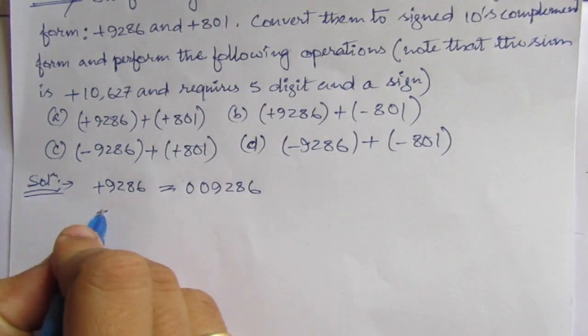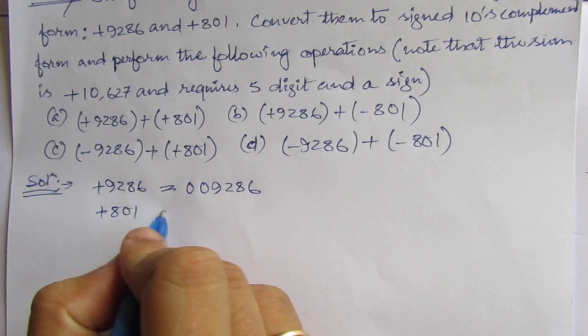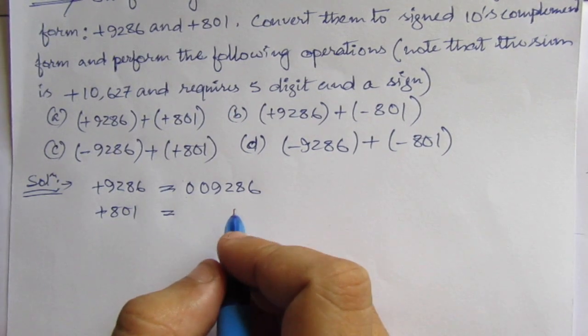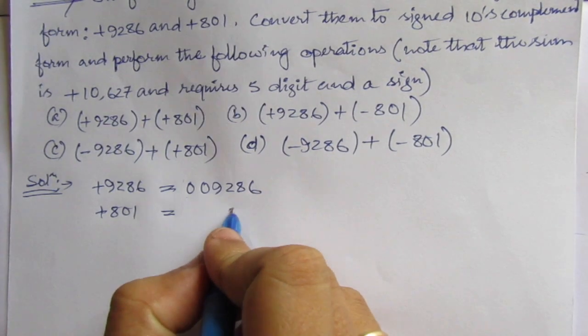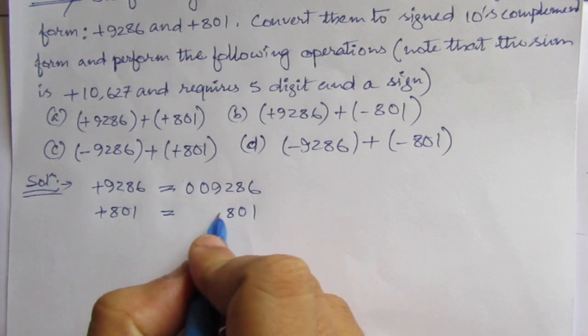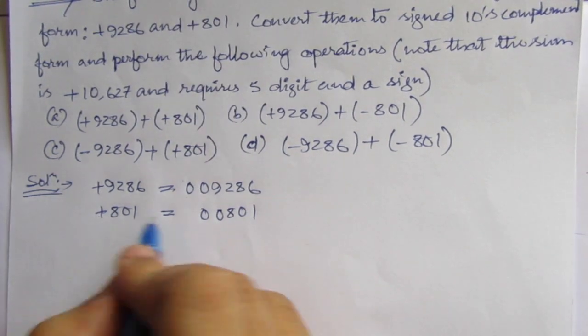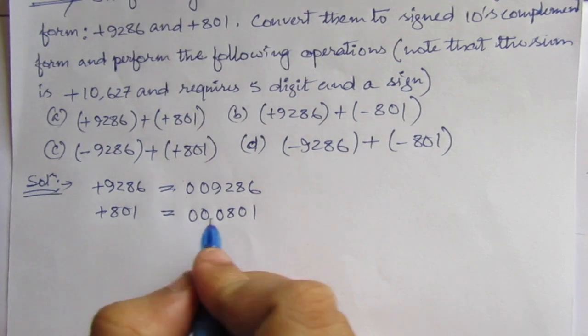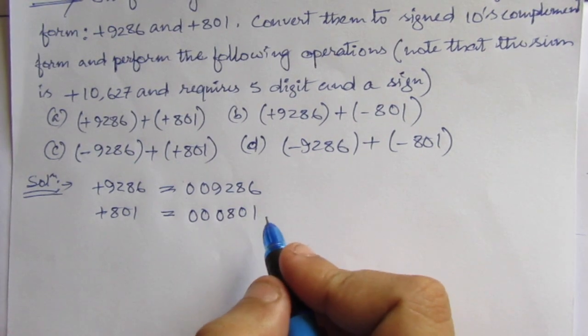Now, let us add for this one. Plus 801. We have to represent it using 6 digits. So 801, so 0, 0 and for this plus sign, we have to use here 0. So, these are the 6-bit numbers.